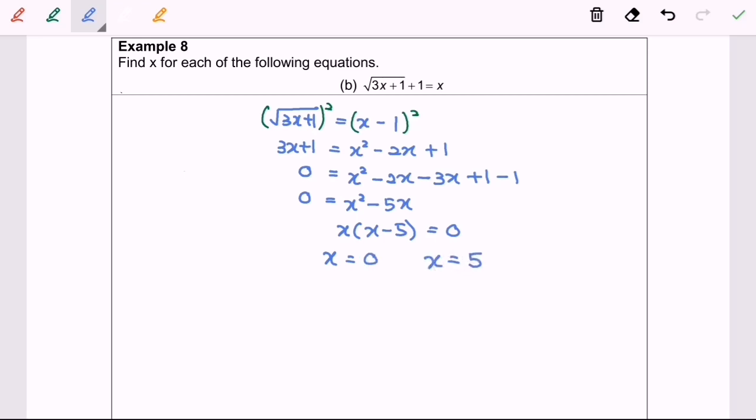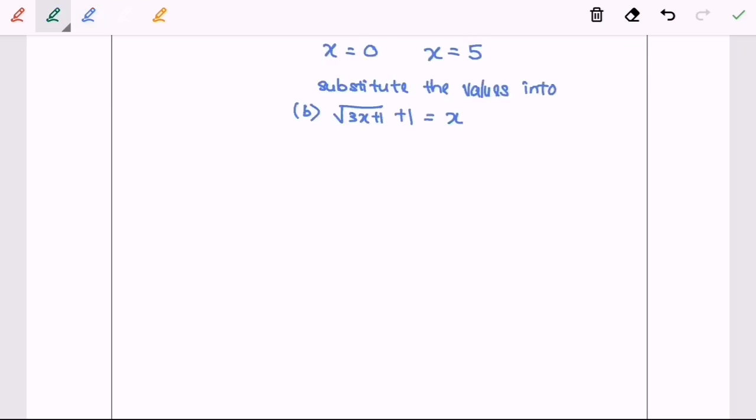Do remember to check the answer. Next, we are going to check the validity of the values by substituting the value into the equation given in B. So now we are going to substitute the value x equals 0.